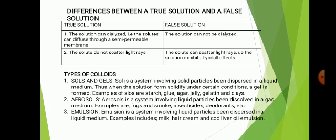There are two major types of colloids: we have the sol and gel, the aerosol, and the emulsion. The sol and gel is a system in which the solute is solid while the solvent is liquid — so you have a solid dissolving in a liquid. Good examples include glue, agar, jelly, gelatin, and clay. When these sols are left standing, after some time they solidify to give what is known as gels.